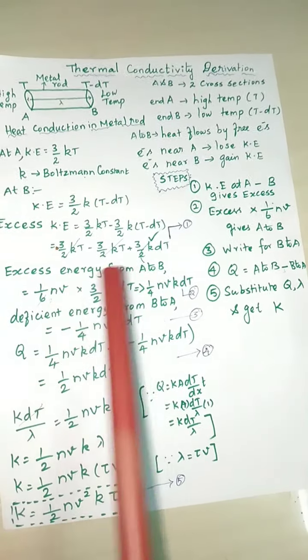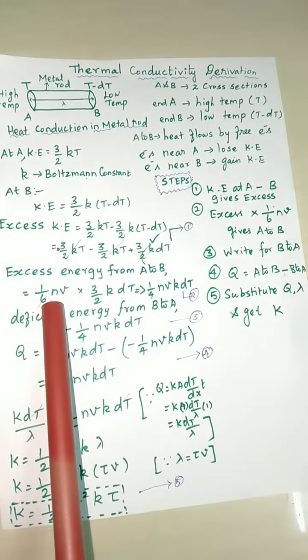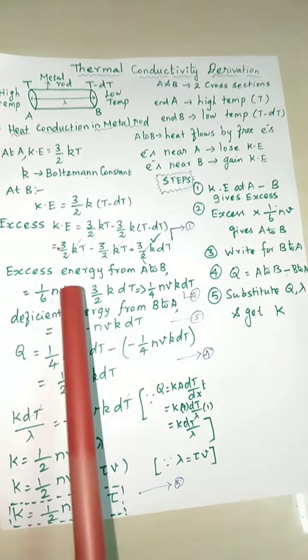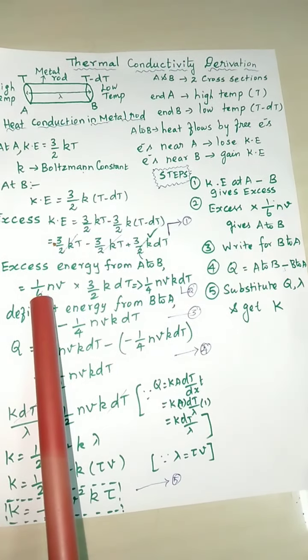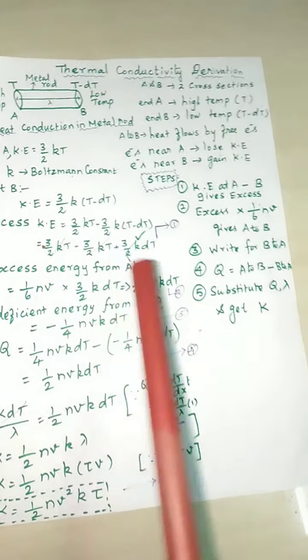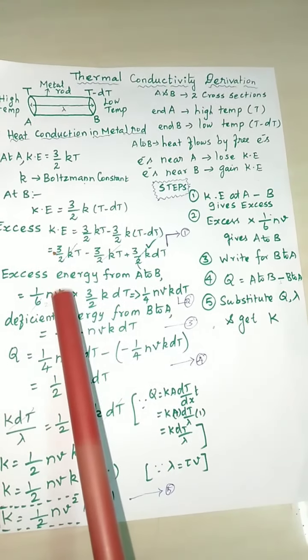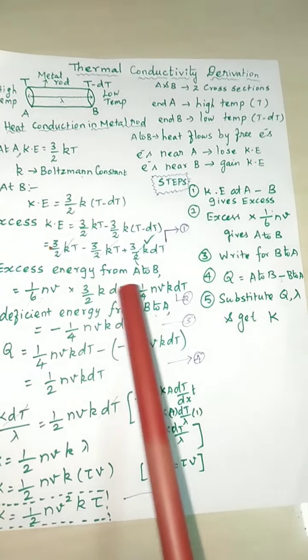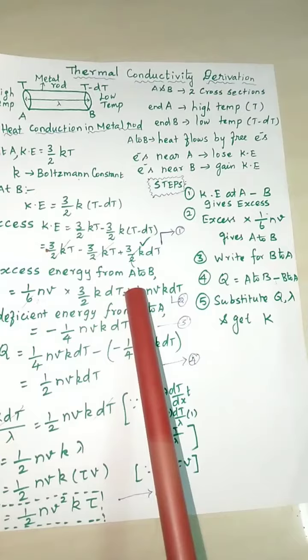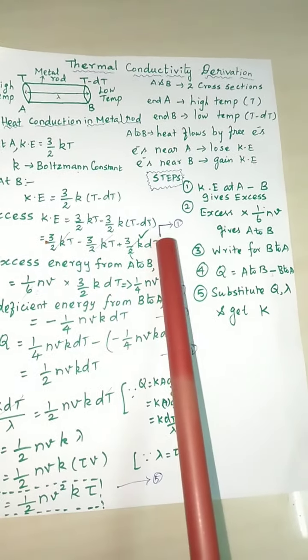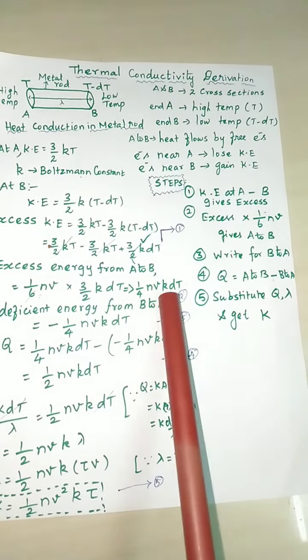Excess energy from A to B. From the end A to B, what is the excess energy we have to find. For that, totally six directions - x minus x, y minus y, z minus z. So we have to use 1 by 6 into N into V. N is the conduction electron and V is the velocity. We multiply this 1 by 6 NV into the result and we get 1 by 4 NVkDT.